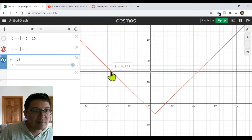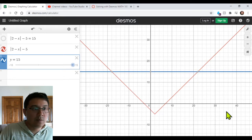So we have a Y value at negative 18. I'm sorry, we have an X value at negative 18 and another X value at 22. So there we are.